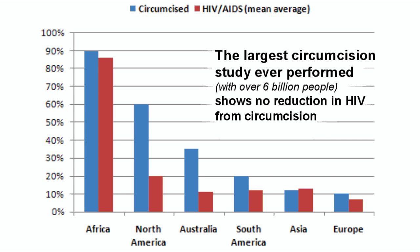The first question I got was, how could they survey or test 6 billion people? The answer is, they didn't. Nobody did. This is a statistical analysis based on data available from the UN and the World Health Organization. We are looking at the circumcision rates and HIV rates of different continents around the world, to see if circumcision seems to help reduce the rates of HIV infection or not.